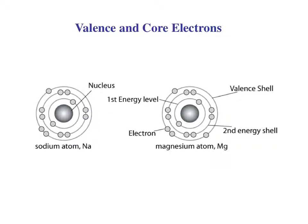This podcast is going to be about valence and core electrons. Valence electrons are probably the most important part of chemistry, and if you can understand what the number of valence electrons means for an atom, it's going to help you immensely when we look at all the chemical reactions and other factors that we're covering this year in this course.